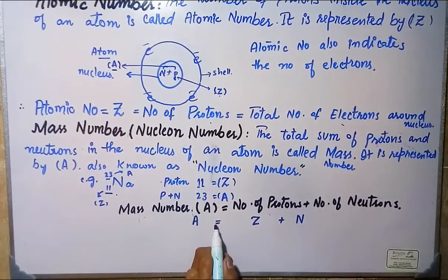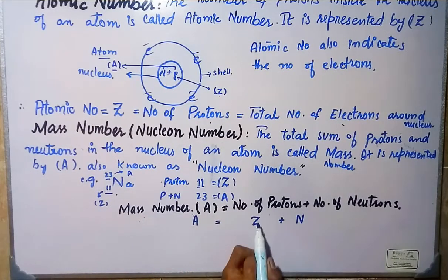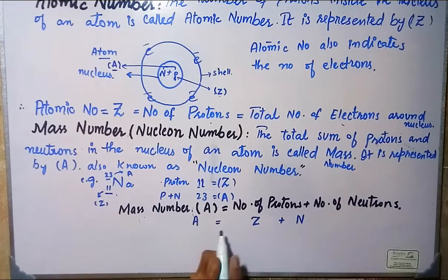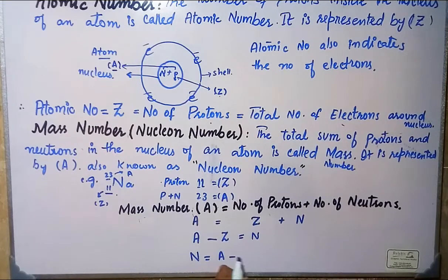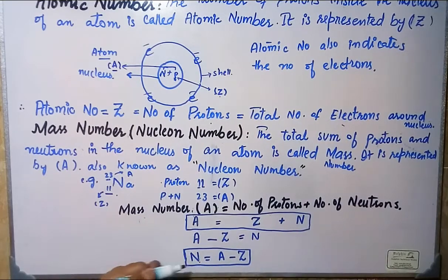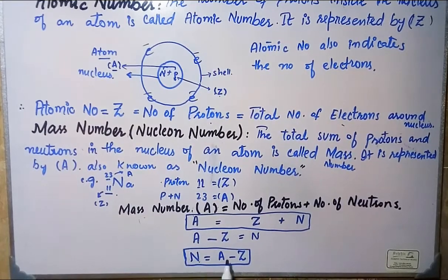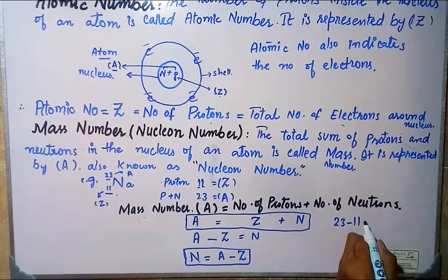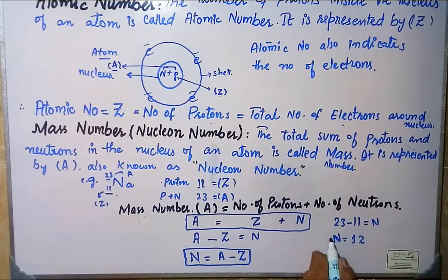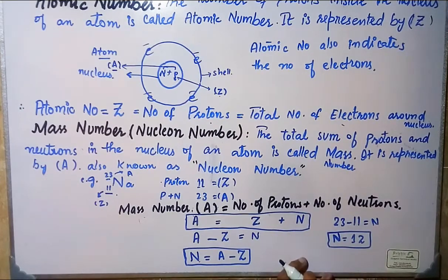So A equals Z plus N. To find the number of neutrons, we rearrange: A minus Z equals N. Putting in the values: 23 minus 11 equals N, so N equals 12. Therefore, sodium has 12 neutrons.